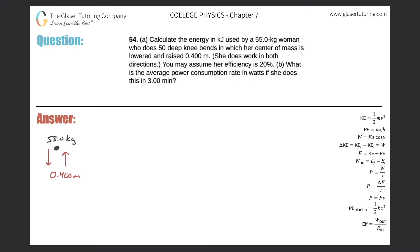Number 54, letter A: calculate the energy in kilojoules used by a 55-kilogram woman who does 50 deep knee bends in which her center of mass is lowered and raised 0.4 meters. She does work in both directions. First, I'm going to simplify this problem down to a single point — the woman's center of mass, which has a mass of 55 kilograms — and she does 50 deep knee bends, going down and then back up 50 times.